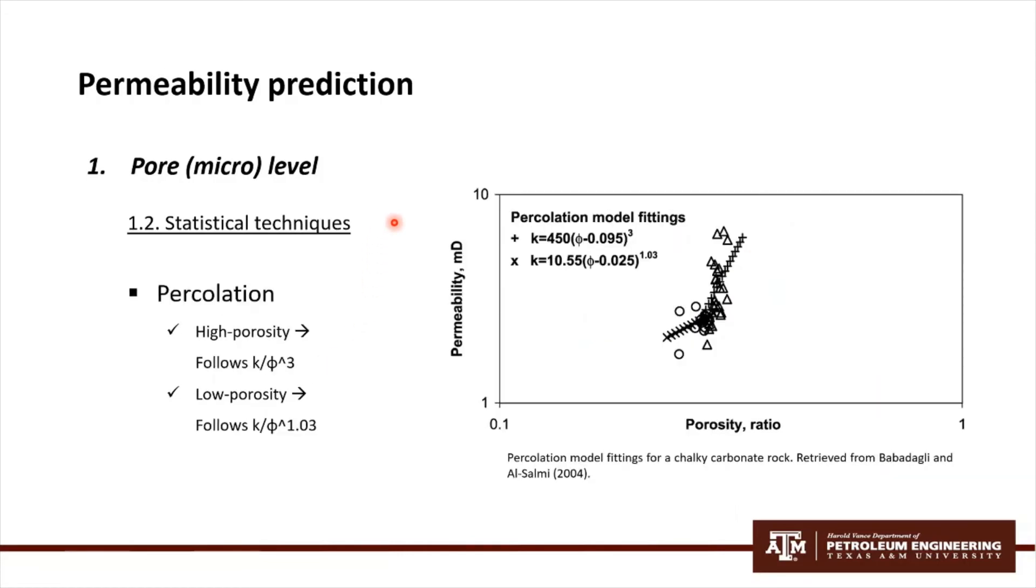On the other hand, for percolation, it seems that there is a relationship between porosity and permeability. We also noted that there are two trends here, one for high porosity and the other one for low porosity. Moreover, it seems that it follows this type of relationship for high porosity, but it shows a different behavior for the lower part. Here you can see that we have to fit the equation in a different way for low porosity.